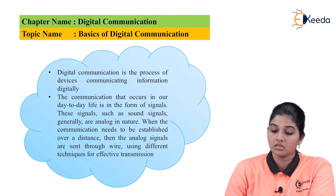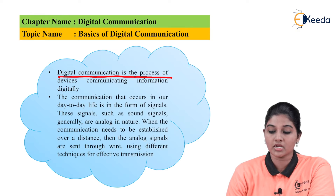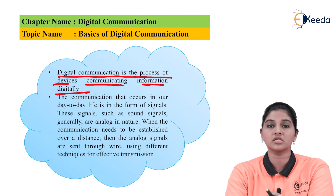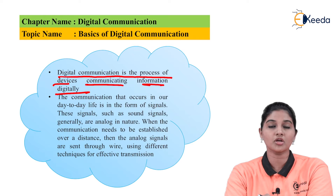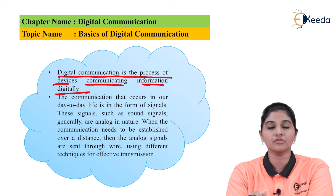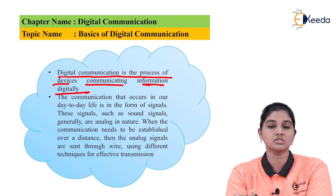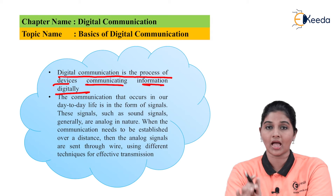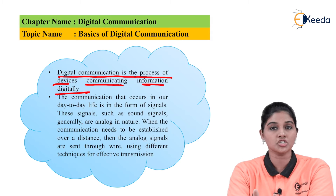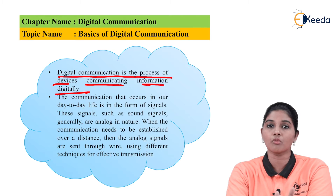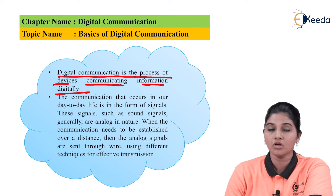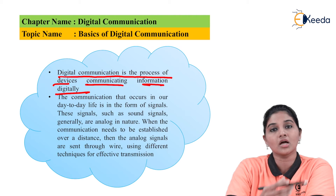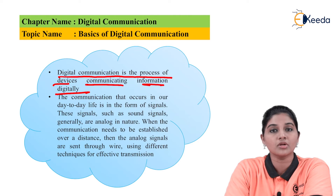Digital communication is a process of devices communicating information digitally. Whenever two devices perform communication in the form of ones and zeros, we can say that the system is a digital system, as it uses machine language in the form of ones and zeros. Now, the communication that takes place in our day-to-day life is in the form of a signal.